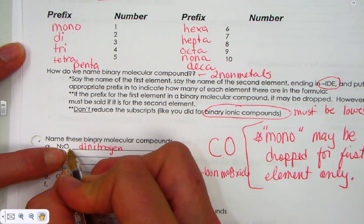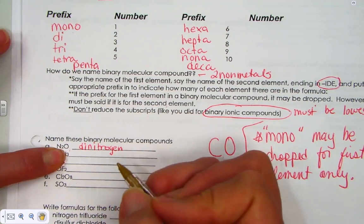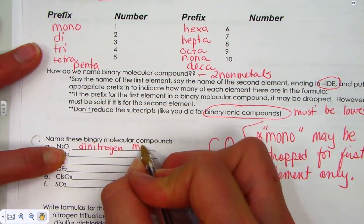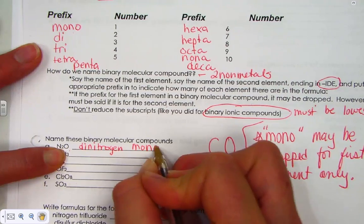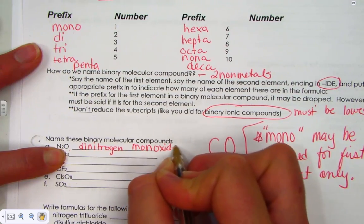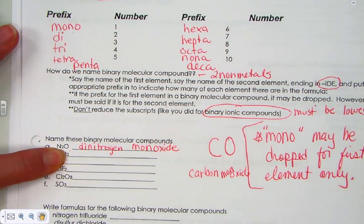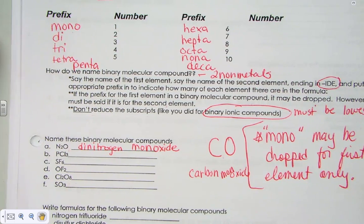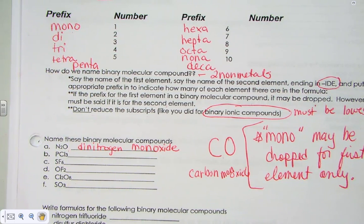The prefix for the number one, that subscript one. It's not written, but we know it's there. Is mono. And instead of saying monoxide, we lop off the double vowel to simplify it. Monoxide. We've just written a formula, N2O, and named it dinitrogen monoxide.